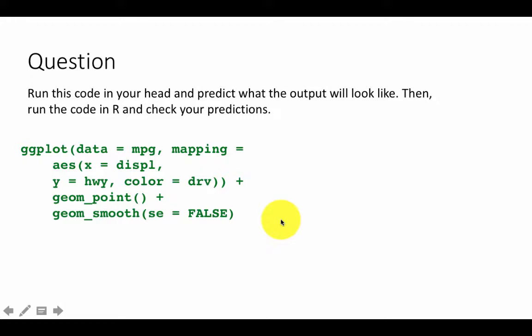Now run this code in your head and predict what the output will look like, then run the R code and check your predictions. I would suggest very strongly that you stop the video and visually imagine what it's going to look like — go through each of the things and see what it's like. Then run the code in R using the code file and see if what you got was what you expected.